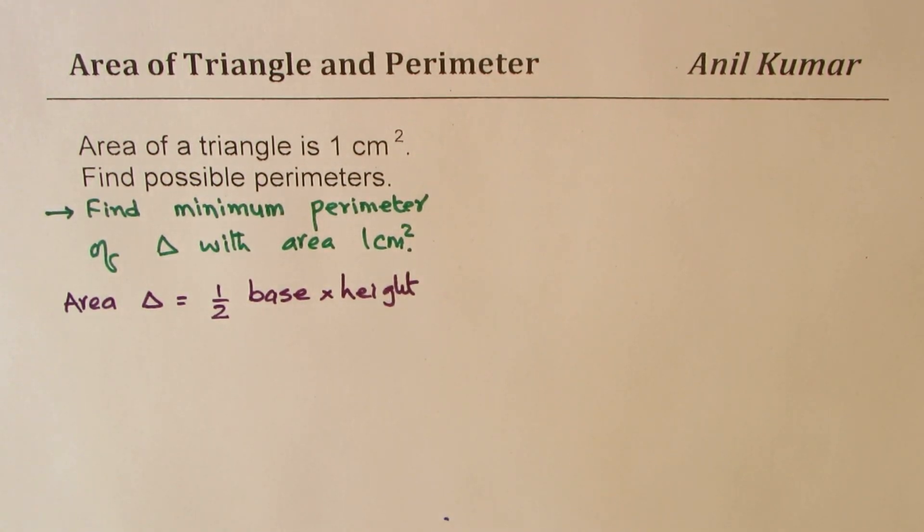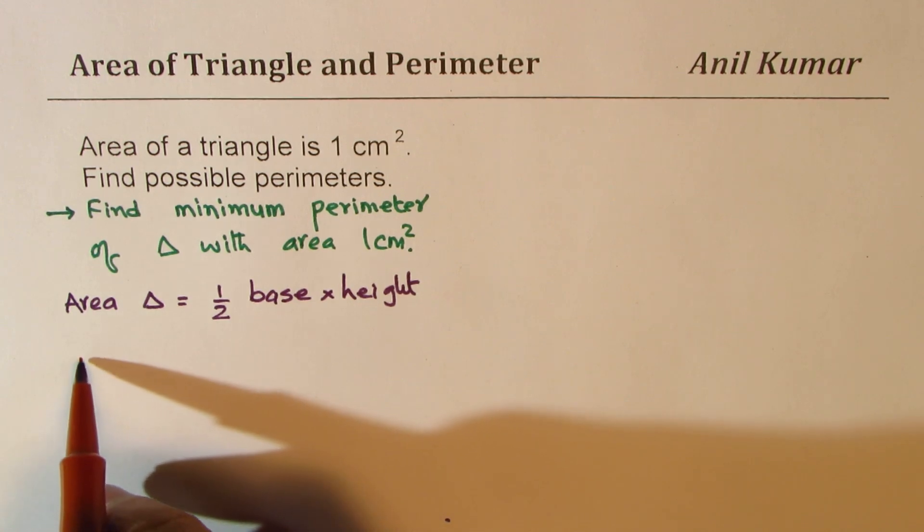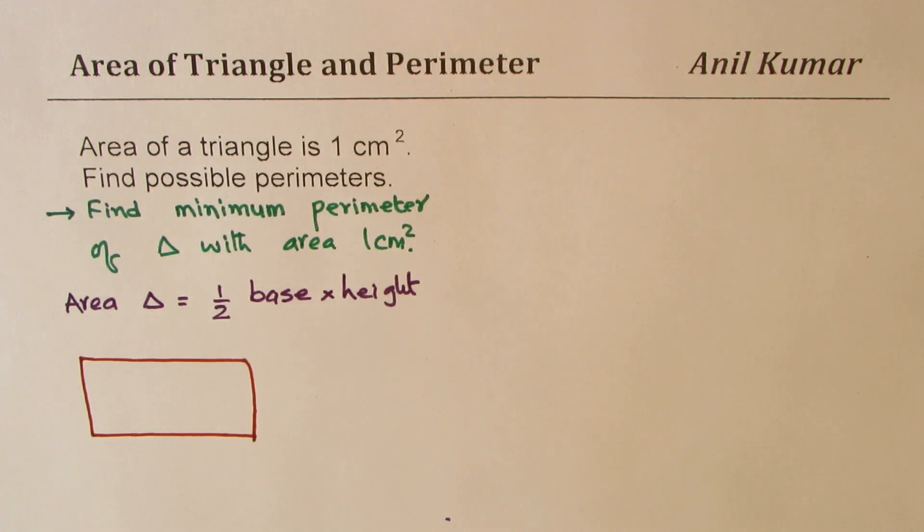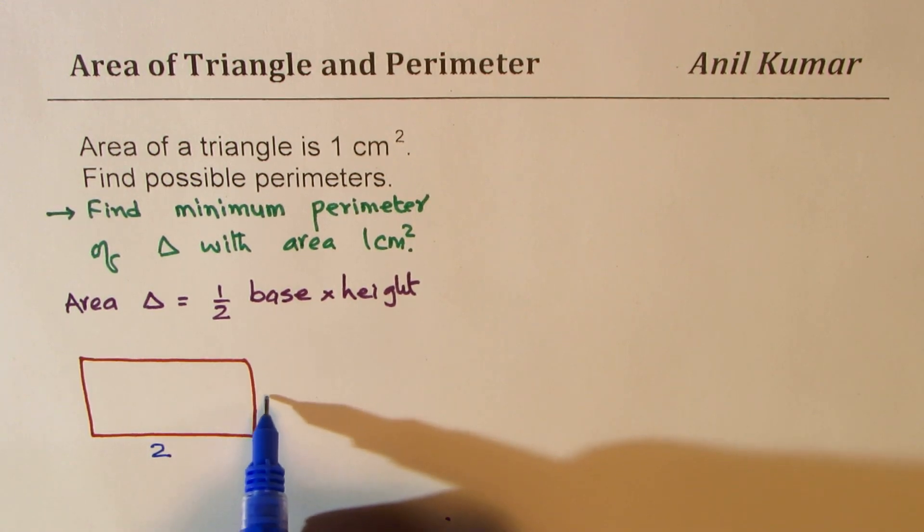Some of you can also think about the triangle within a rectangle. So I could say that let this be my rectangle. And if area of rectangle is two, then area of triangle is one.